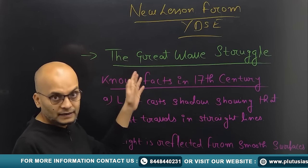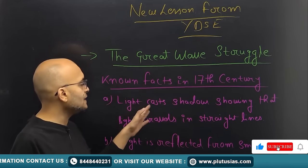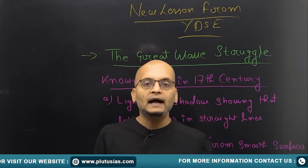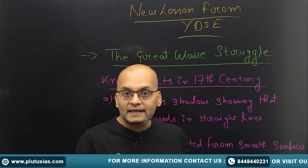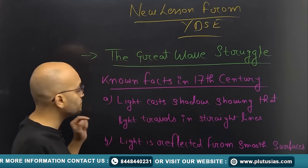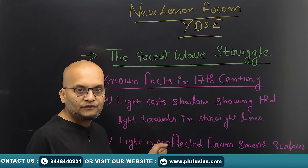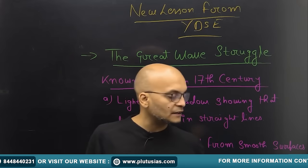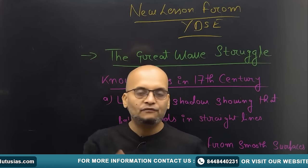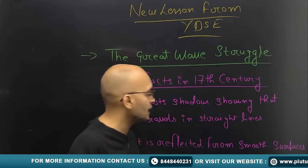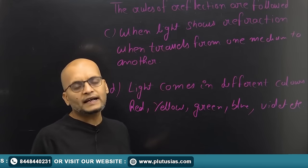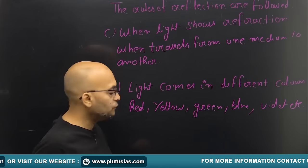The known facts by the learned people in the 17th century: first, light casts a shadow, showing that light travels in a straight line — that is rectilinear motion. Second, light is reflected from smooth surfaces. If there is a mirror and light is incident on it, light will get reflected, and the laws of reflection will be followed.